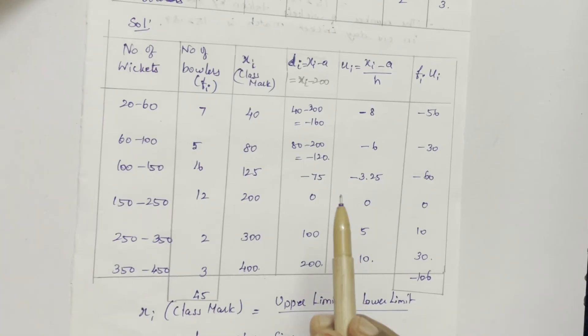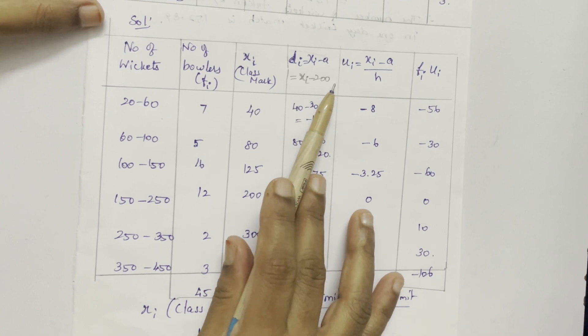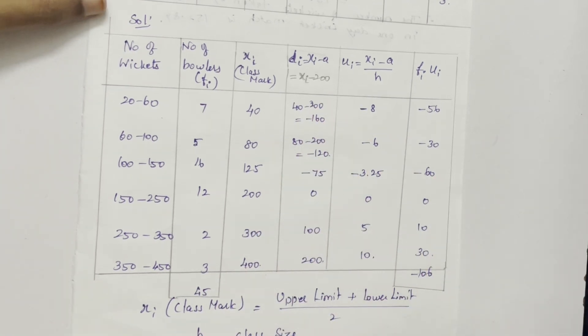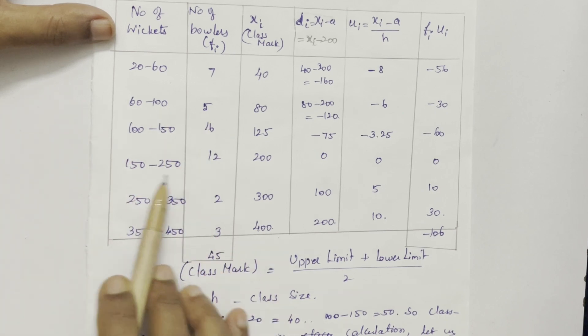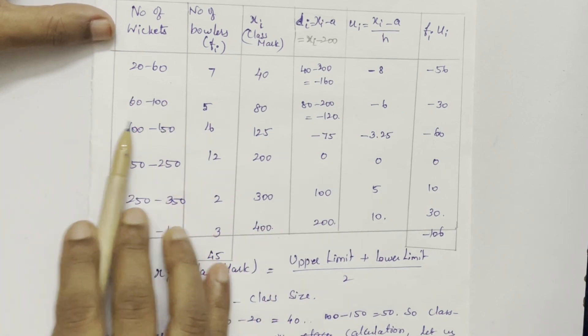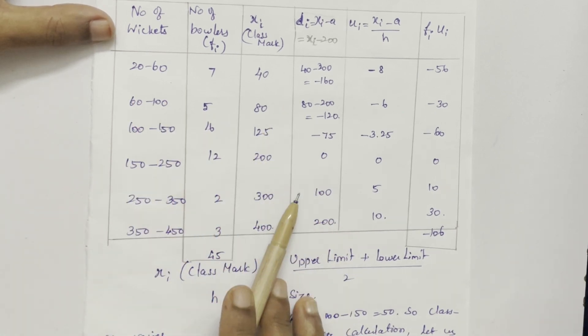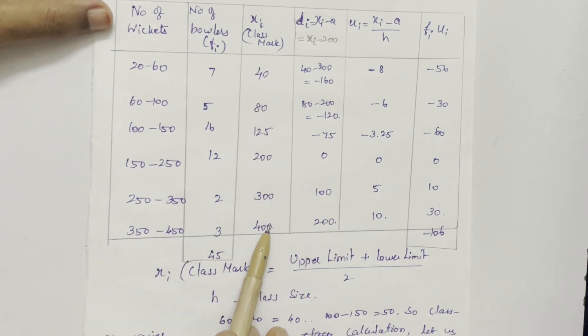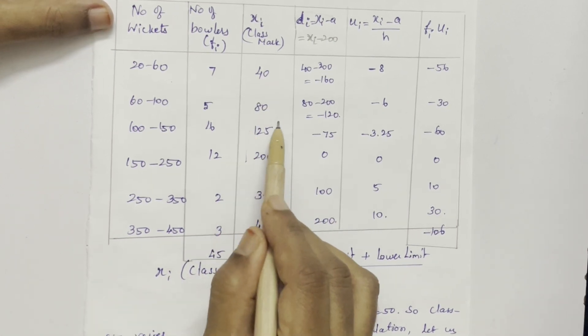Next, DI. DI is XI minus A. A is assumed mean. How to choose that assumed mean? Here the number of rows are even. If the rows are odd, we can choose the middle most XI. Here the middle most numbers are these two.